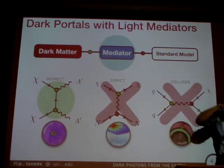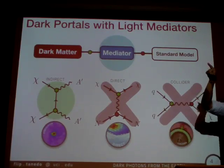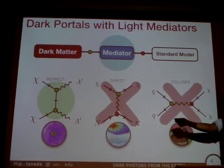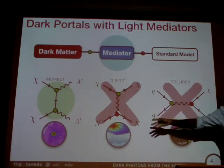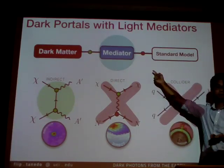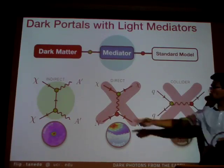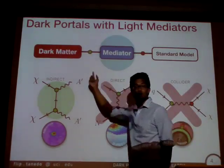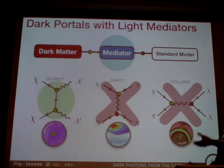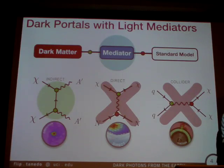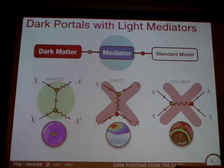Processes like direct detection, where dark matter scatters off of ordinary matter, or LHC production, where ordinary matter produces this mediator, can be very small. You can make these parametrically small by just assuming that this connection is small. But we still get this WIMP miracle if we have an order-one coupling here where the relic abundance of dark matter is still set by thermal freeze-out. Thermal freeze-out is the idea that the amount of dark matter we see comes from the balance between expansion of the universe and dark matter annihilation. I have just made my theory a little bit more complicated and now I have a way to avoid these stringent constraints.